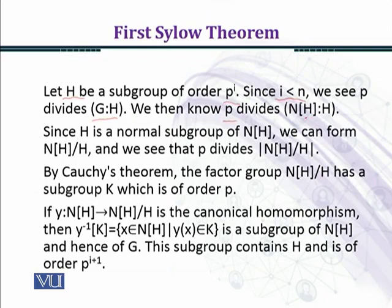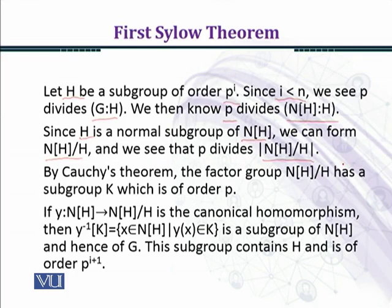P divides the index of H in N(H), where N(H) is the normalizer of H. Since H is a normal subgroup of N(H), we can form the factor group N(H)/H. We see that P divides the order of N(H)/H, so by Cauchy's theorem the factor group N(H)/H has a subgroup K of order P.